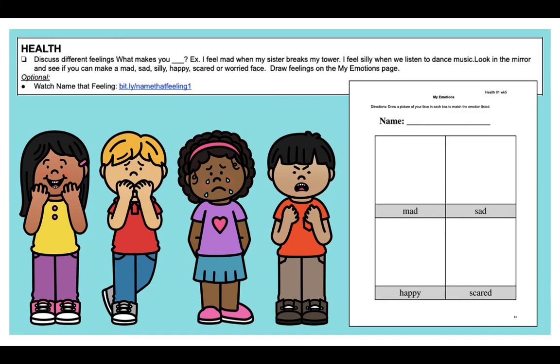So in your packet this week, you've got a piece of paper that looks like this. It says my emotions. Draw a picture of your face in each box to match the emotion. So there's a box that says mad. You're going to draw what your face looks like mad. There's one that says sad. There's one that says happy. And there's one that says scared. So try to draw your face at how you feel in those four emotions, those four feelings.